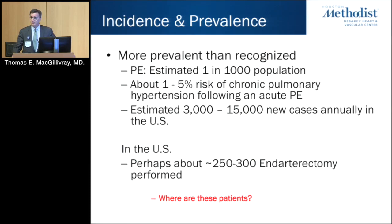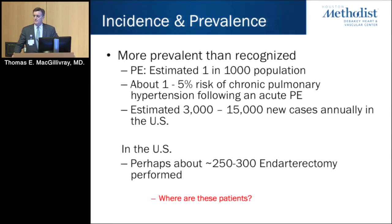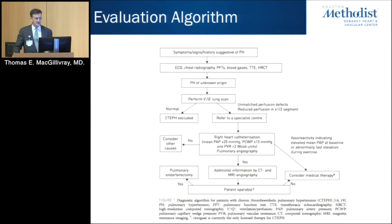This problem is a much more prevalent problem than we once thought. About one to five percent of patients who have acute pulmonary emboli go on to develop this disease. If you figure about 3,000 to 15,000 cases annually, and you look at the definitive treatment — which is surgery — in the United States there are only about up to 300 or maybe a little more done per year. So there is a big gap in where these patients are and why they aren't being treated.